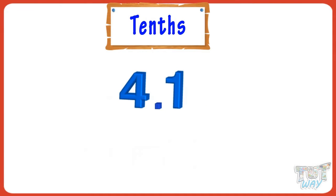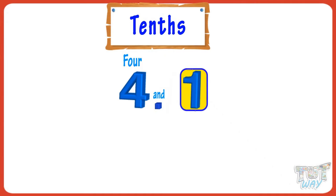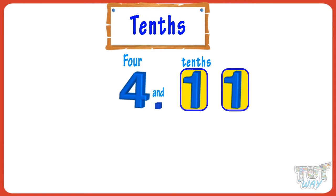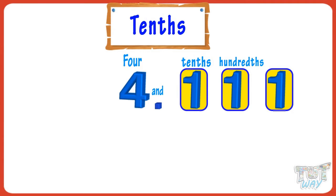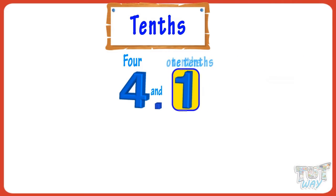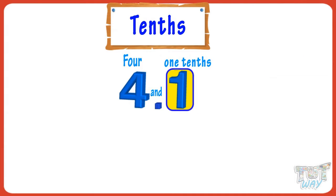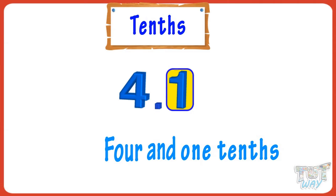Now let's name this number. The number before the decimal is the whole part — it is named as it is. Then the decimal is named as 'and.' If there is one number after the decimal, it is named as tenth. If there is a second number after the decimal, it is named as hundredth. If there is a third number after the decimal, it is named as thousandths. Here we have one digit after the decimal, so it will be named as tenths. So we will name this number as four and one tenths — 'and' is for the decimal.